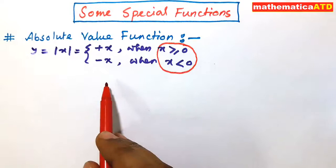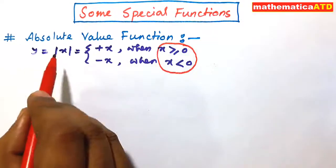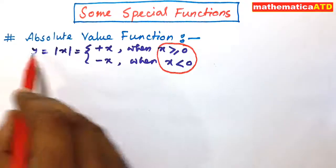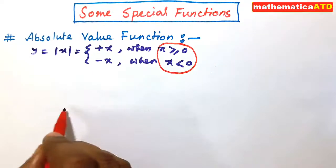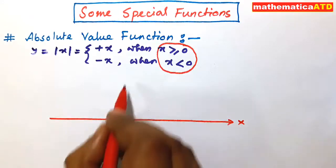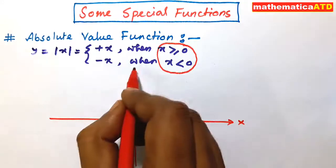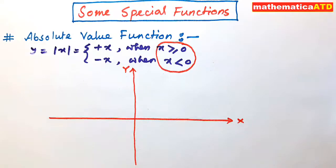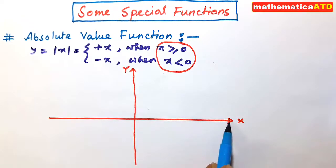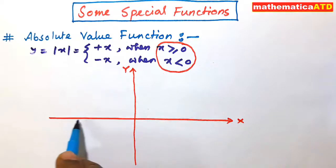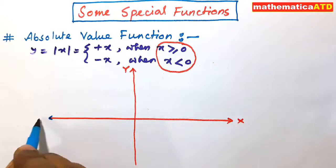We shall draw the graph of this function y = |x|. Since |x| = +x or -x, these are actually straight lines. This is the x-axis and this is the y-axis. x ≥ 0 starts from the origin on the right side, and x < 0 is on the left side of the x-axis.